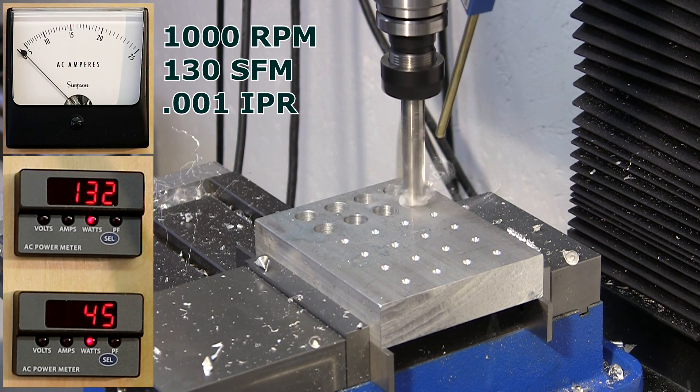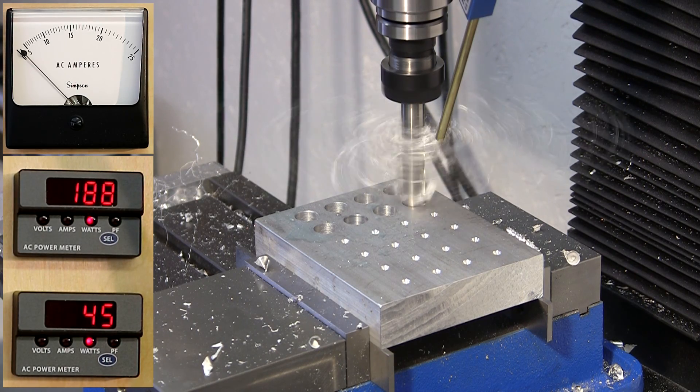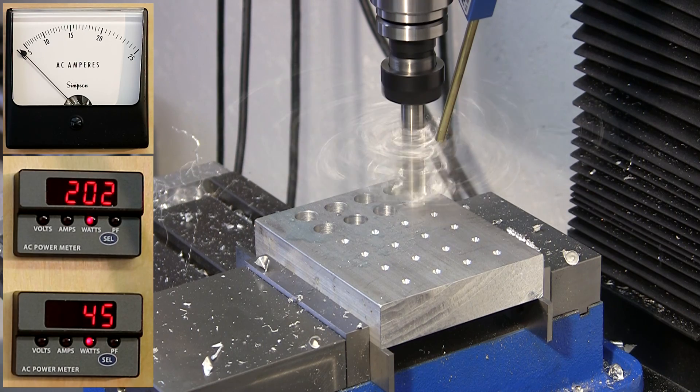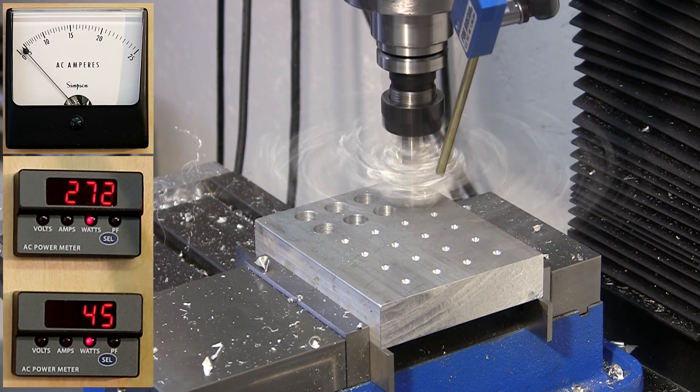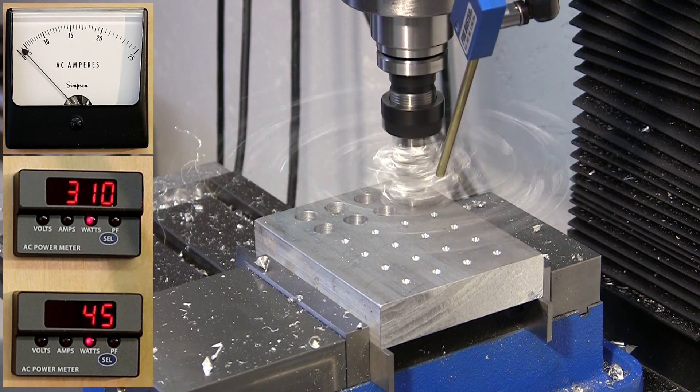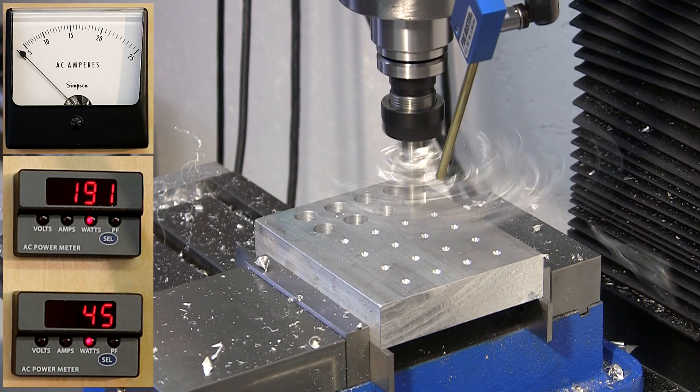The second drilling test uses a slower spindle speed and feed rate. While the spindle is under considerably less load, this is not an efficient drilling operation. These stringy chips, in addition to being dangerous, are representative of a feed rate that is too low.